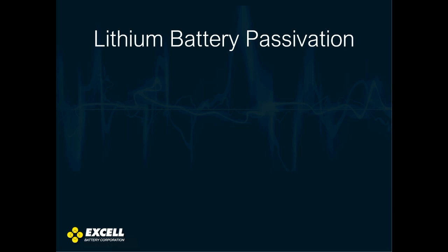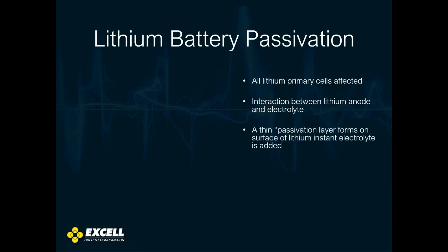This is basically something that is affecting all lithium thionyl chloride cells. It forms the instant that electrolyte is added to the cell, and it's the interaction between the lithium anode and the thionyl chloride electrolyte. It's a thin passivation layer that forms on the surface of lithium the instant the electrolyte is poured into the cell, and it's a protective layer over the anode giving the cells a very, very long shelf life.